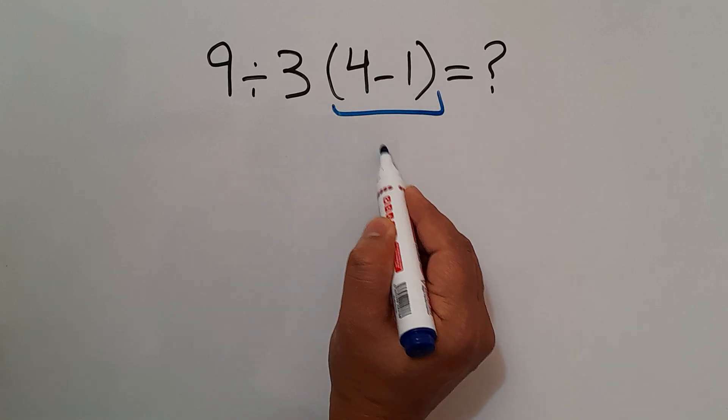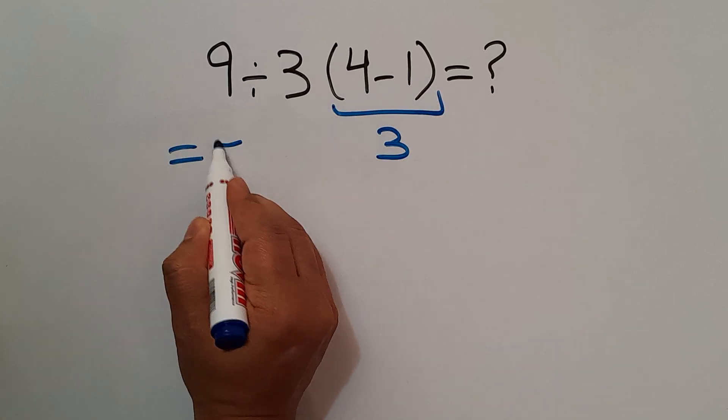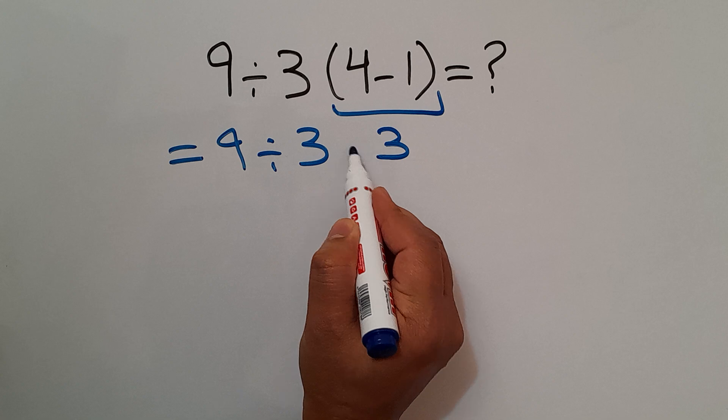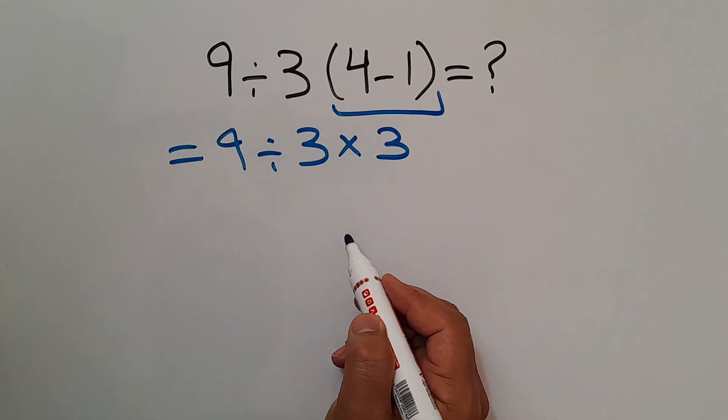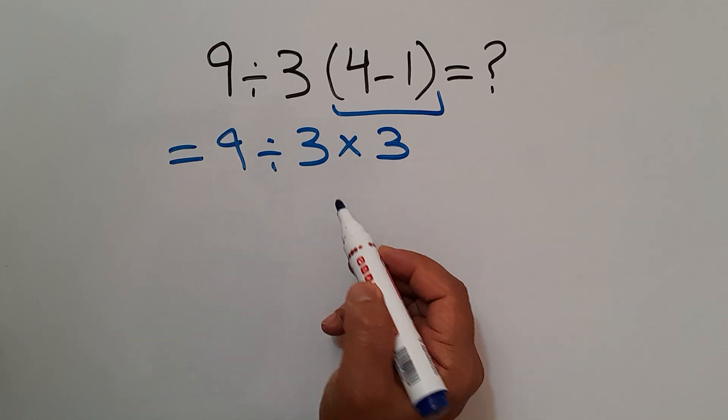4 minus 1 gives us 3. So we have 9 divided by 3 then times 3. And now we have one division and one multiplication.